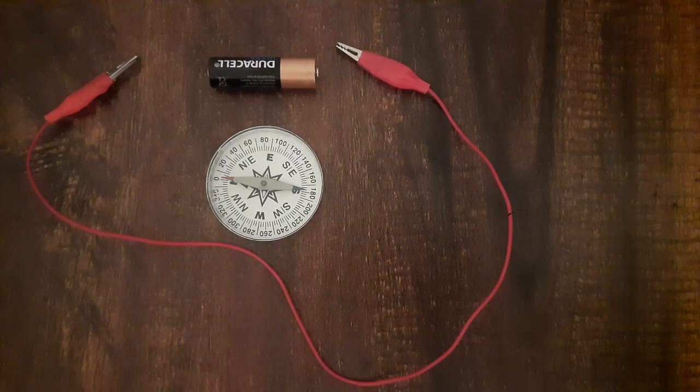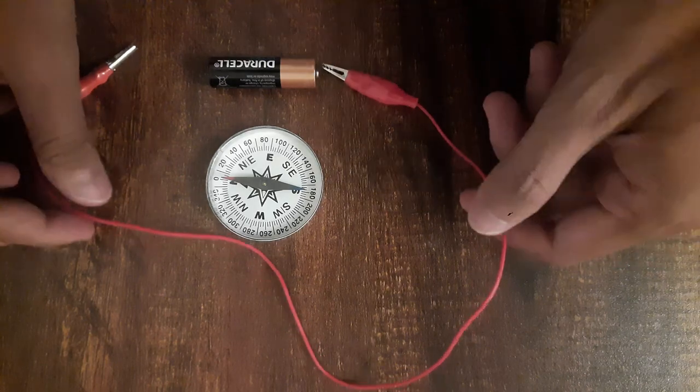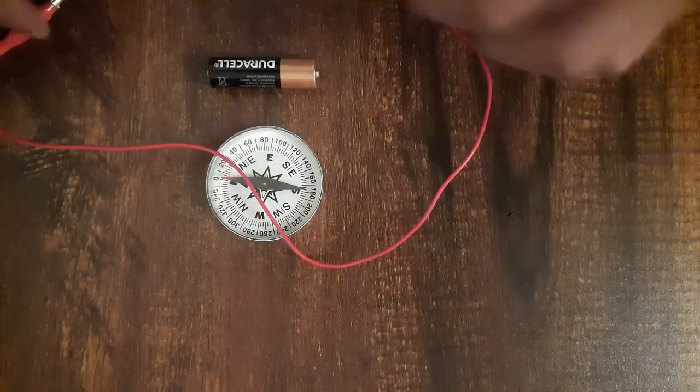I have a cell, a wire with alligator clips at the end, and a magnetic compass. You can also have a loose wire but make sure the insulation is removed from both ends of the wire.